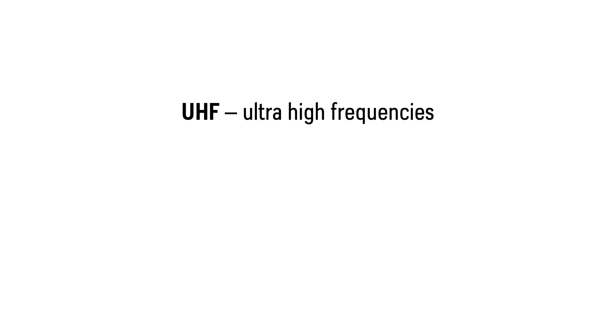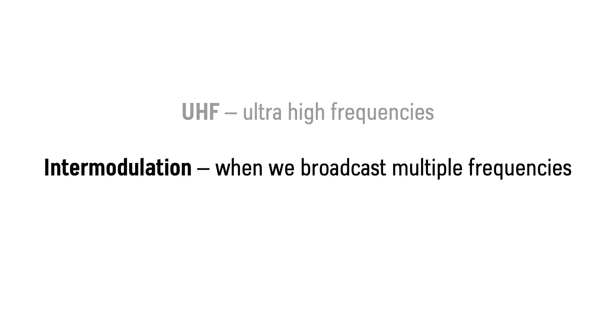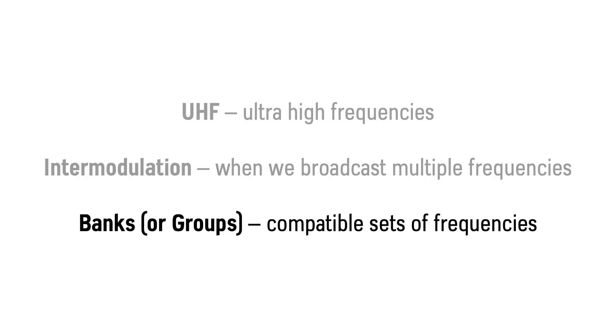When we talk about wireless audio in production, we often just say RF, which stands for radio frequencies. These exist far higher in the frequency spectrum than what we humans can actually hear, but the more we use wireless technology in society, like with smartphones, the more crowded this bandwidth is becoming. In this video we look at the UHF range, then discuss intermodulation, and see how to avoid it using banks or groups of compatible frequencies.